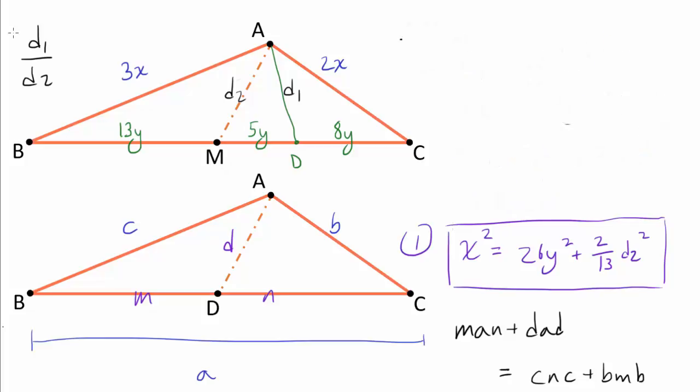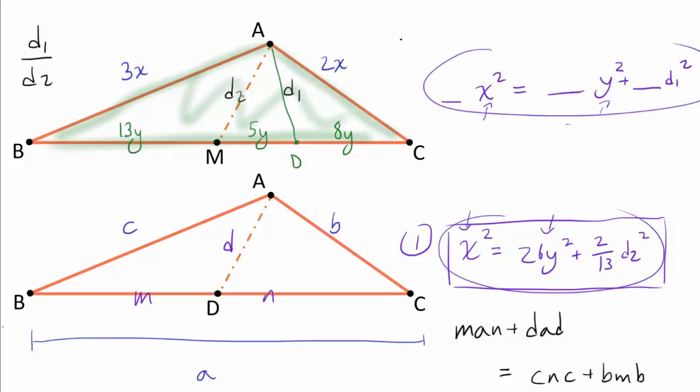Now, your instinct may tell you that maybe we should now apply Stewart's theorem to triangle ABC one more time, but this time using AD as the cevian instead of AM. This is not going to work, because if you go through the same process, the symmetric things are going to result, and you're going to end up with something times X squared is equal to something times Y squared, plus something times D1 squared. And realize that our goal is to find D1 over D2, so we gotta make sure our X squared go away, and the Y squared go away. But if we have these two expressions like this, there is no obvious way of making X squared and Y squared go away simultaneously. We can make X squared cancel out, but not both.